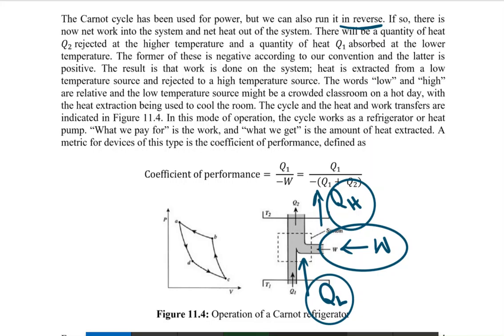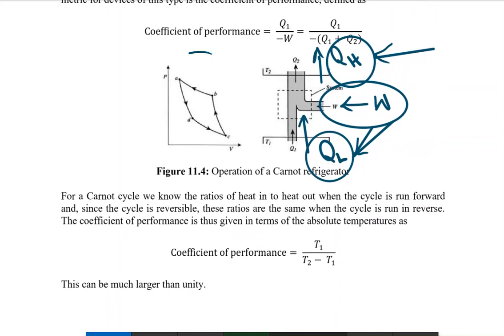The terms high temperature and low temperature reservoir are relative. For example, the low temperature reservoir could be somewhere inside the room, and the high temperature reservoir could be somewhere outside the room. So we extract heat from inside the room and reject it to outside. What we pay for is the work done, and what we get is the amount of heat extracted from the room.